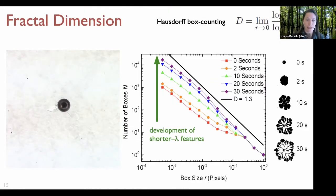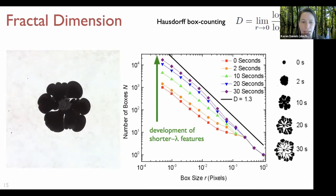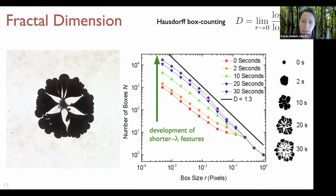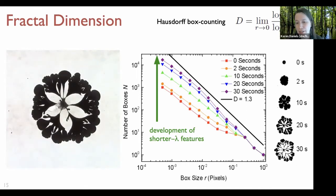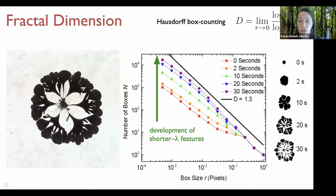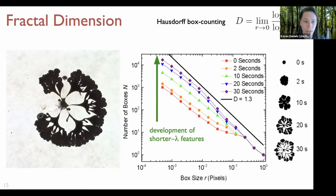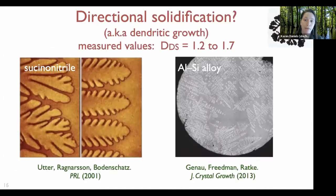Here's a movie of the fractal-like shape developing with screenshots. For each image we did a Hausdorff box-counting technique to check if these were fractals. Early on there was only a limited range over which you might call it a fractal, but as time went on more short-wavelength features developed and the range of fractal-like behavior grew substantially.